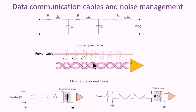With twisted pair, each conductor tends to be exposed equally to external noise radiation. Therefore, the voltage induced by this is going to be equal in direction, polarity, and magnitude. As a result, the balanced differential receiver will cancel that to zero, and only the original data will appear at the output.